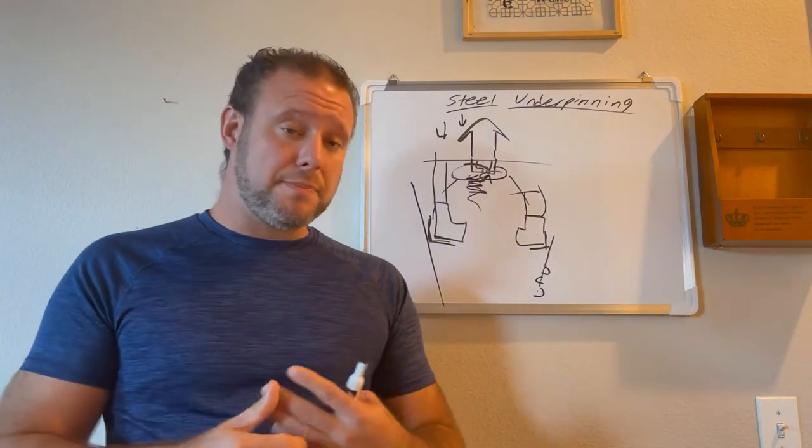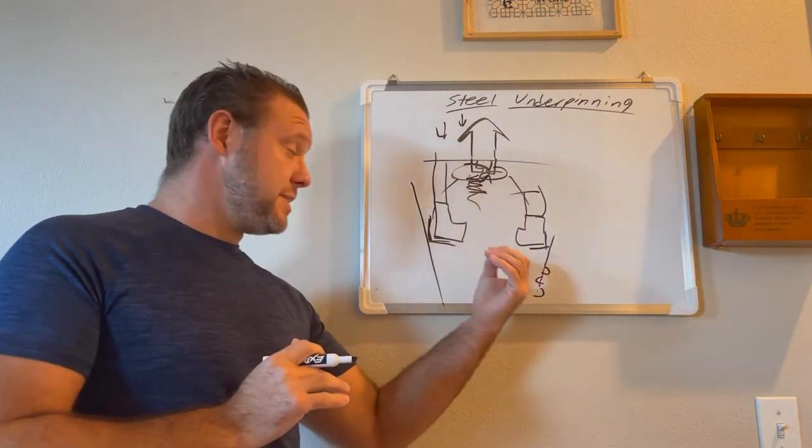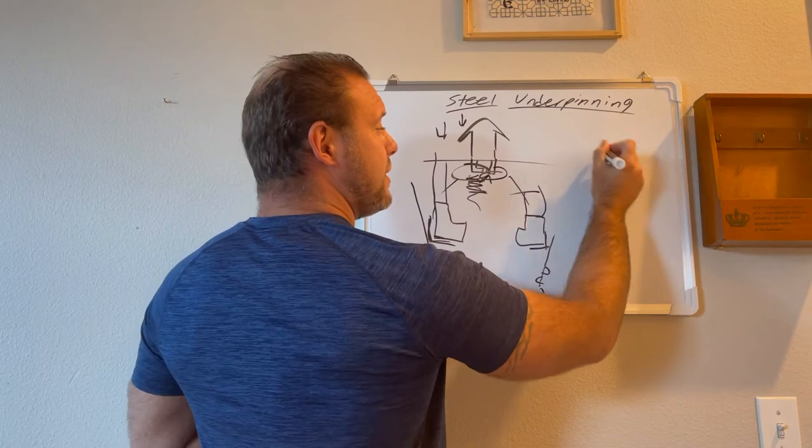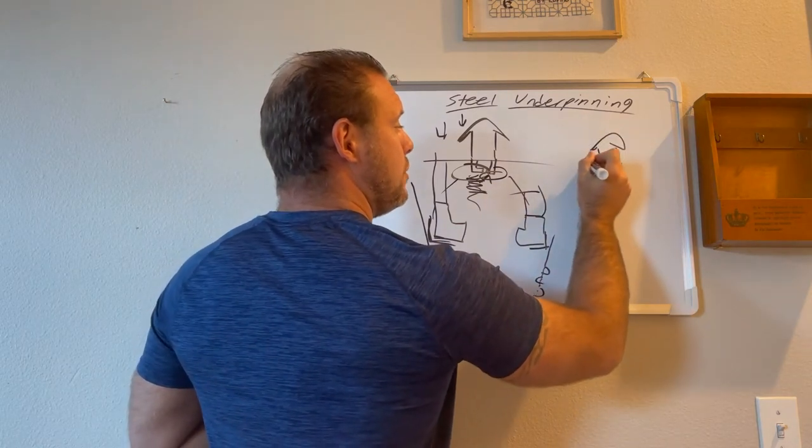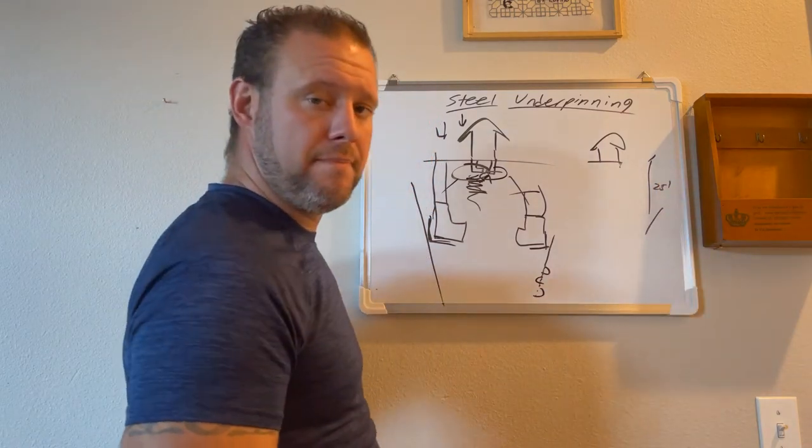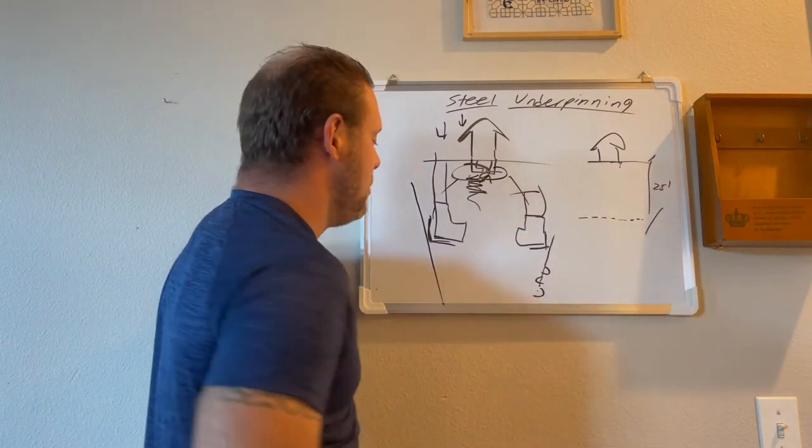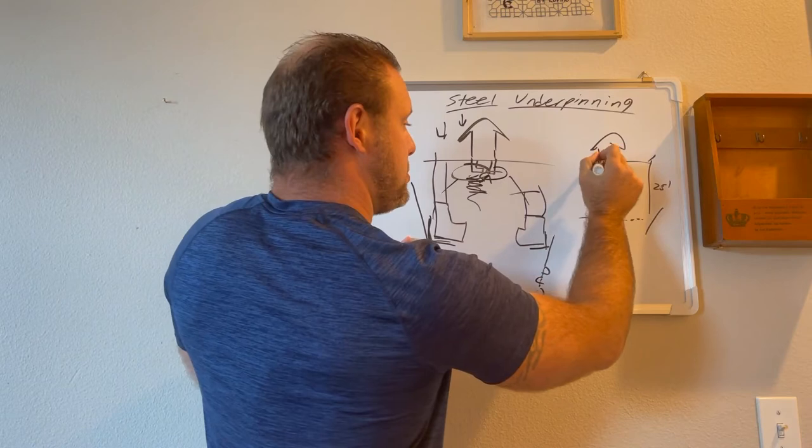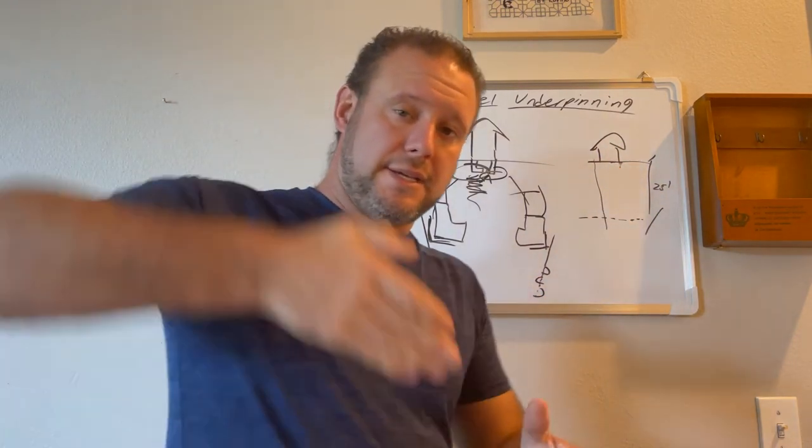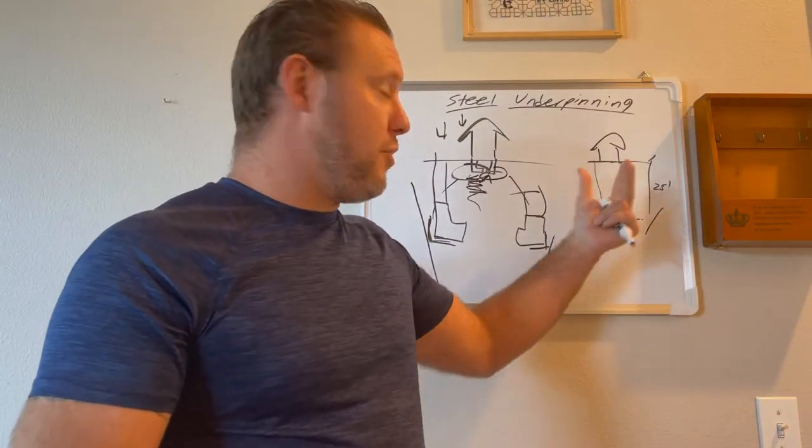So there's advantages and disadvantages to both systems. Times where you would use helical piers versus push piers. But this is an overall really good system because if you've got a house over here and it's got a failure, let's say 25 feet deep, right? If it's got a failure 25 feet deep down here in the soil, what you can do with these push piers is basically push the pier all the way below that weak soil zone. And the idea is it pushes down until the strength of the soil is stronger than the weight of the home. Right.